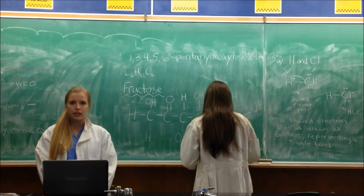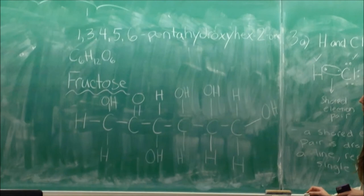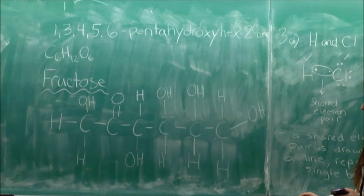So the IUPAC name for this molecule is 1,3,4,5,6 pentahydroxyhex to 1. Its molecular formula is C6H12O6 and its common name is fructose. And this is what the structural diagram of fructose looks like.